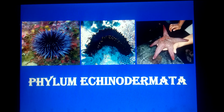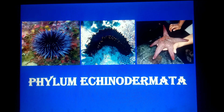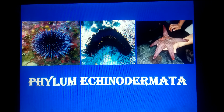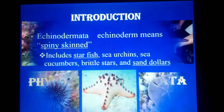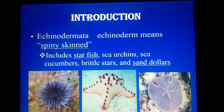Now discussing phylum Echinodermata. You can see here photographs of some echinoderms which are mostly familiar to students — like sea urchin, starfish on the left side, and sea cucumber in the middle. The sea cucumber is shaped like a cucumber, and the sea urchin has spiny skin. I will give an introduction to Echinodermata, then the characteristics, then discuss the body systems.